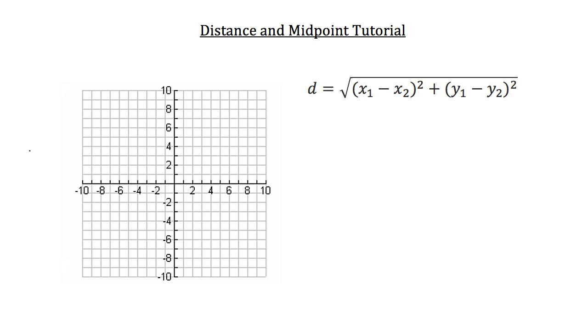Now what that means is the x1 and y1 are referring to one coordinate point and the x2 and y2 are referring to a second coordinate point. The distance we're calculating is the distance between those two coordinate points.